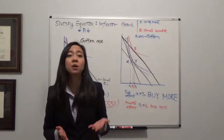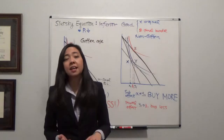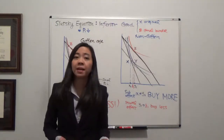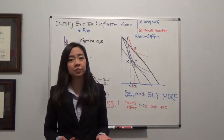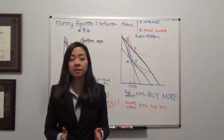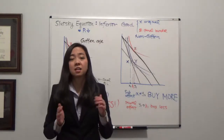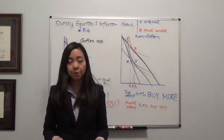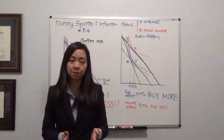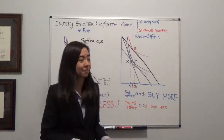So last time we talked about when the price of a good changes, then the quantity demanded is going to change. The change in quantity demanded we call the total effect. Now we can decompose the total effect into substitution effect and income effect.